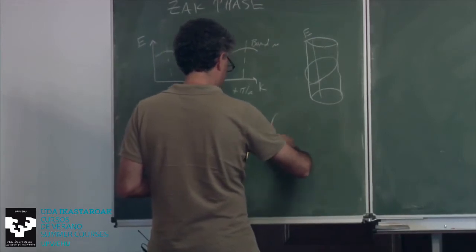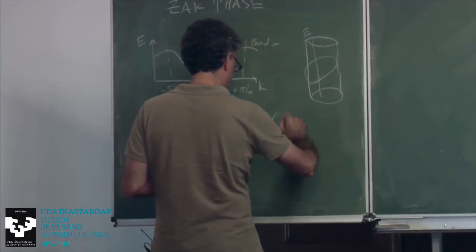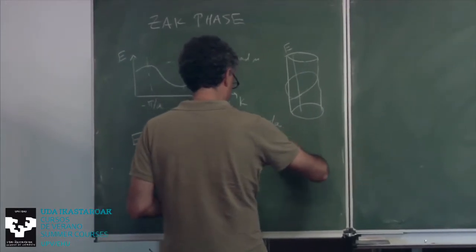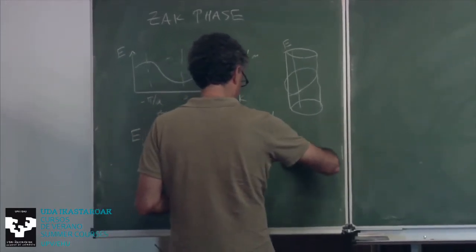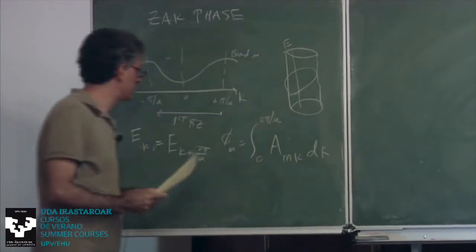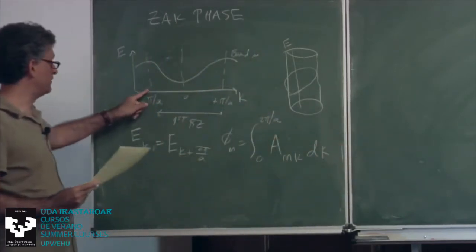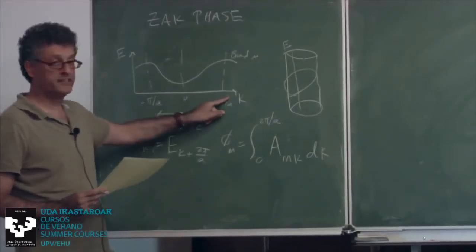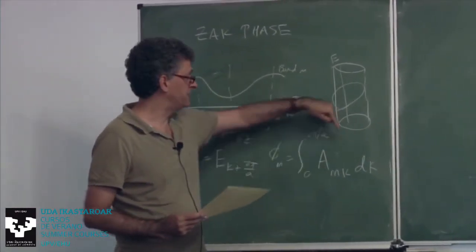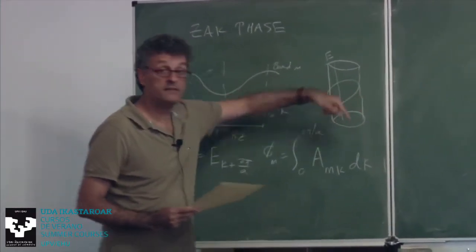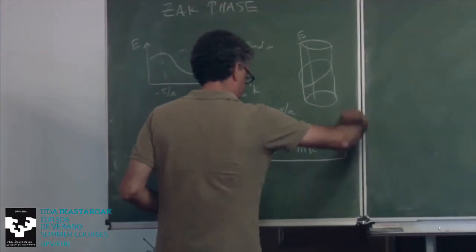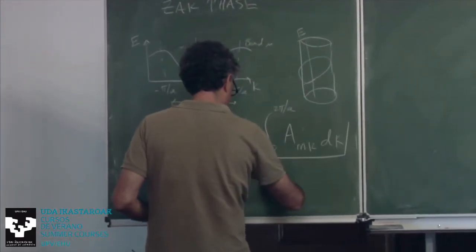From this perspective, it seems natural to define a Berry phase for a given band N as the integral from 0 to 2π/a, or from -π/a to π/a. Since everything is periodic, this is the integral of the Berry connection of the cell-periodic Bloch states. That's what people sometimes call the Zak phase.